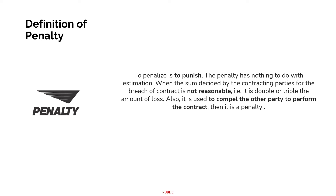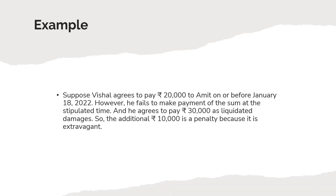The definition of penalty: a penalty is meant to punish. Penalty has nothing to do with estimation. When the sum decided by the contracting parties for breach of contract is not reasonable — for example, it is double or triple the amount of loss — or is used to compel the other party to perform the contract, then it is a penalty. For example, Vishal agrees to pay 20,000 to Omit on or before January 18, 2022, but fails to do so and agrees to pay 30,000 as liquidated damages. The additional 10,000 is a penalty because it is extravagant.